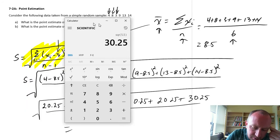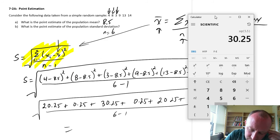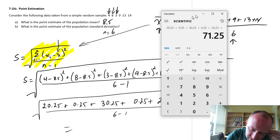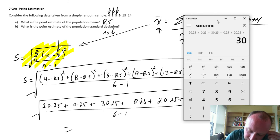20.25 plus 0.25 plus 30.25 plus 0.25 plus 20 and a quarter. Plus what was this last one, 30 and a quarter. Equals.